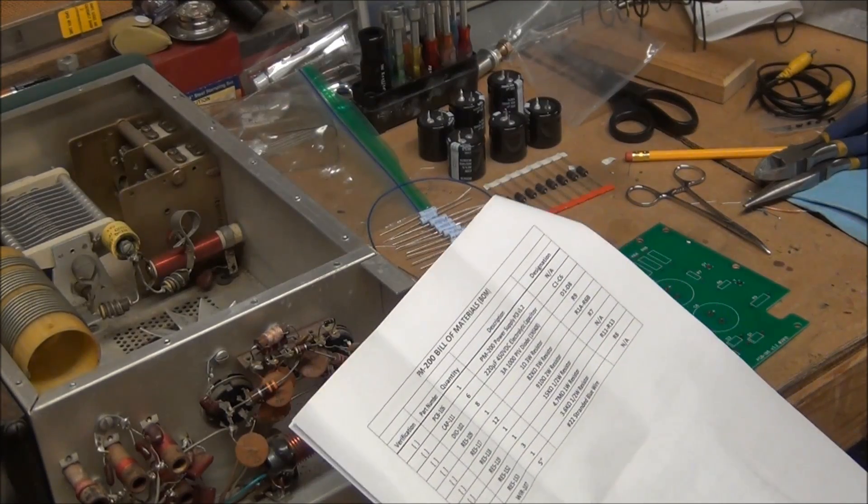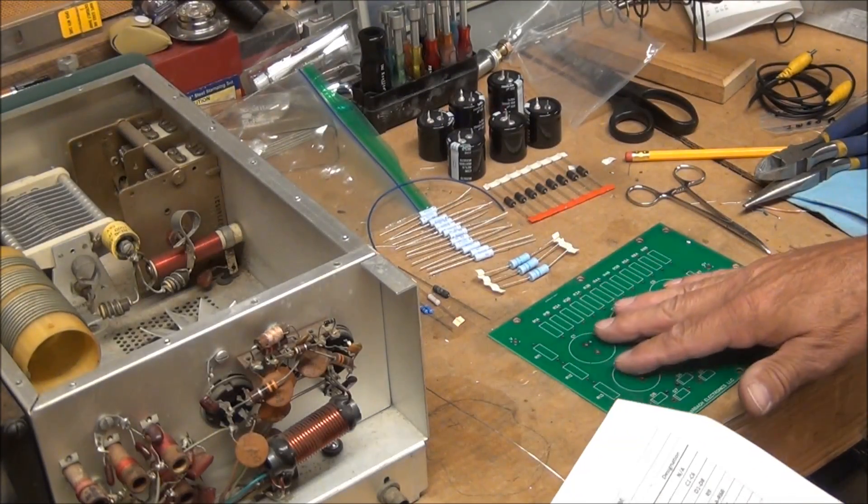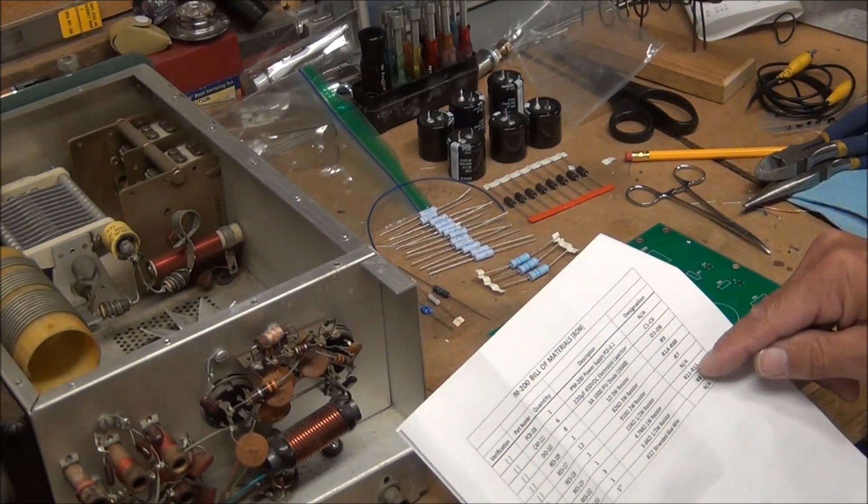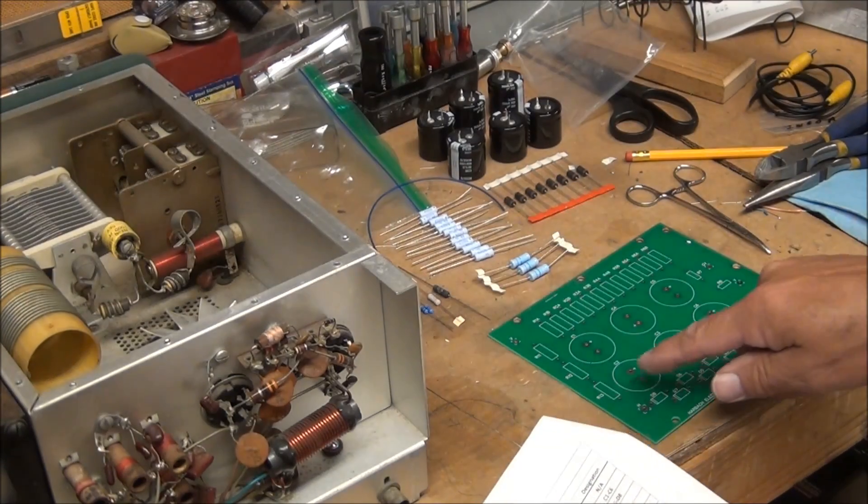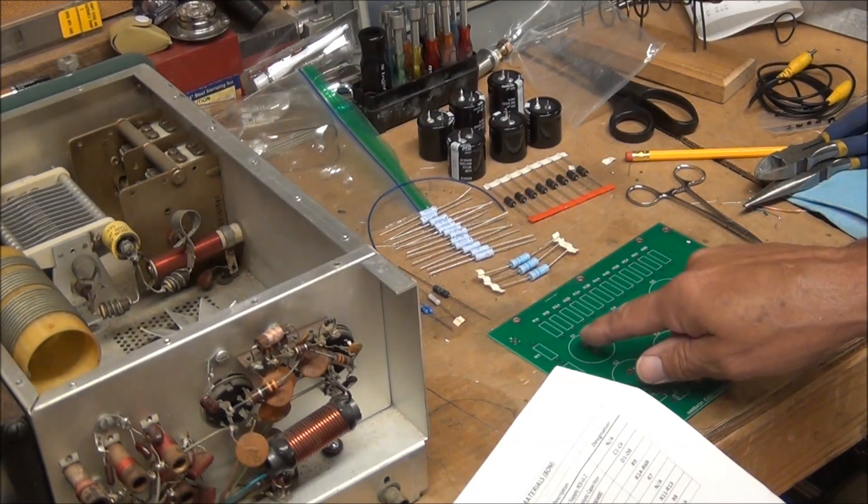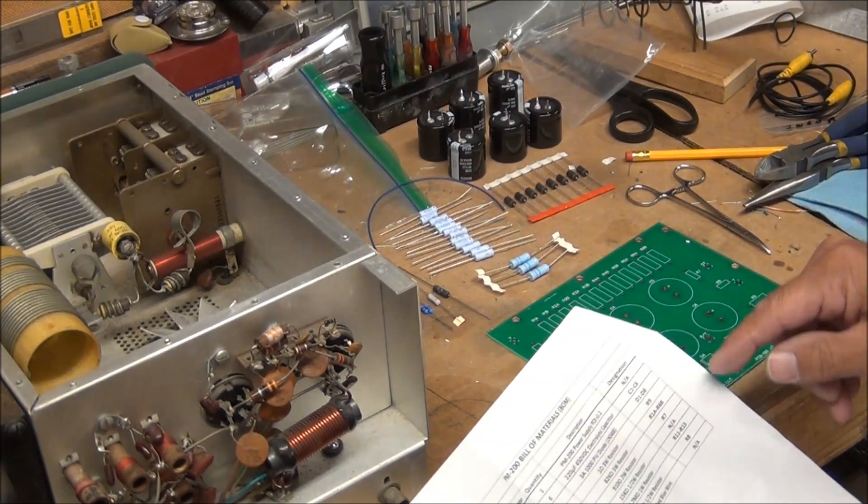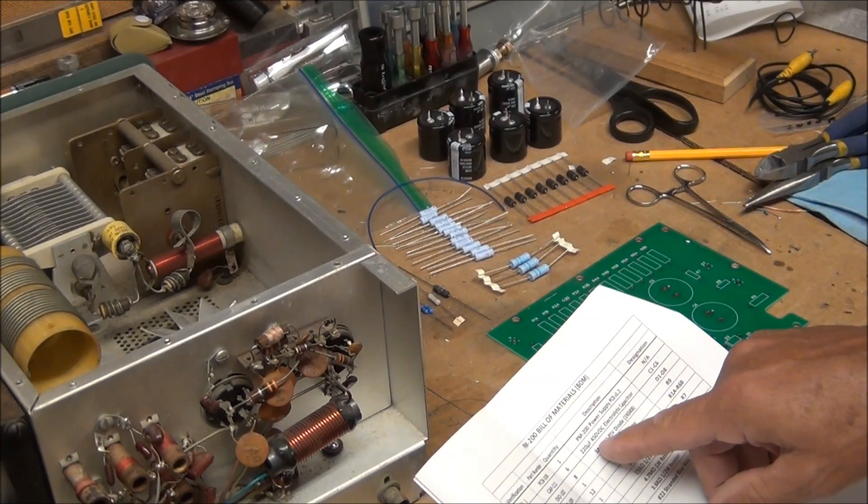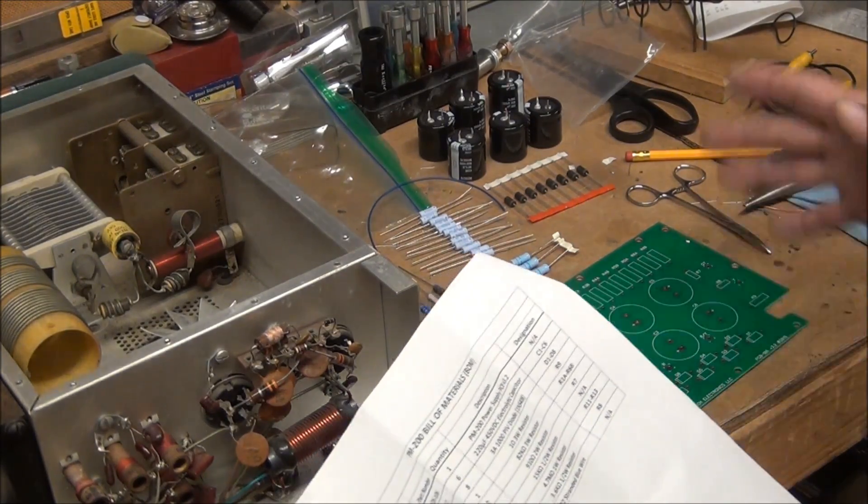I'm going to go ahead and start soldering stuff on here. Everything is labeled by number on here and there's an associated part number on the right. For example, C1 through C6, that's these large electrolytic capacitors. They're listed C1 through C6, each one's listed here, one two three four five six. It tells you exactly what it is, 220 microfarad 450 volt electrolytic capacitor. Everything's pretty well spelled out.